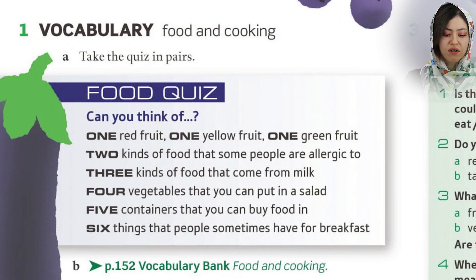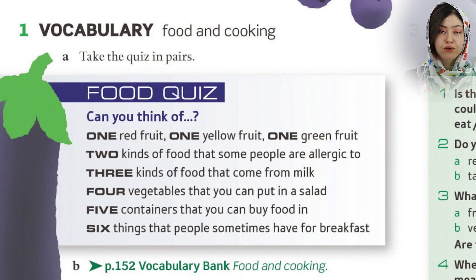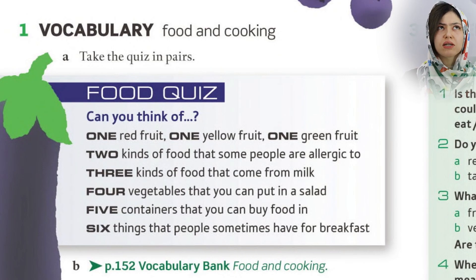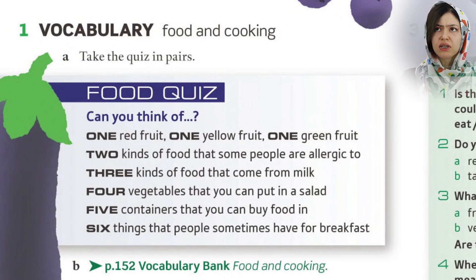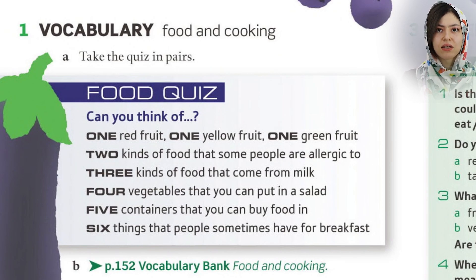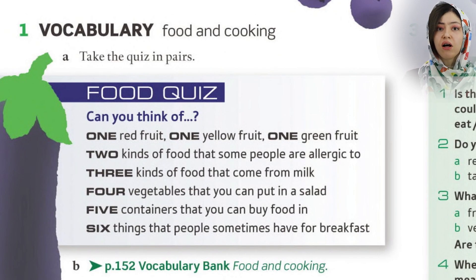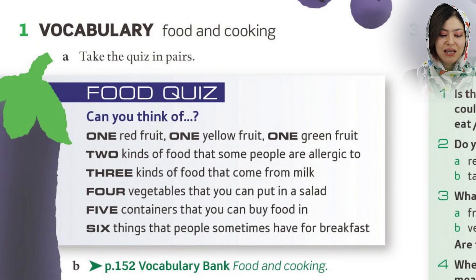Can you think of four vegetables that you can put in a salad? Let me think. Lettuce — that's one of the vegetables we put in salad. The second one is carrot. And broccoli. You have different tastes and you come from different cultures, so you can also tell us what you put in a salad.